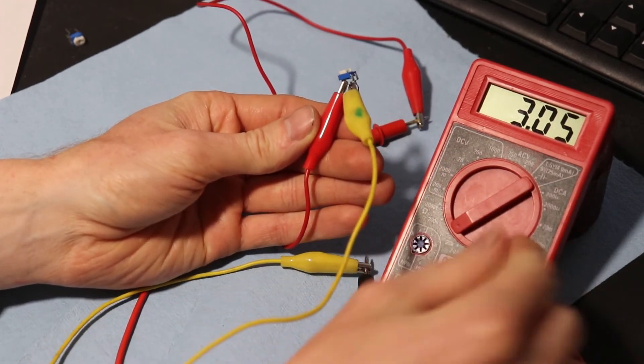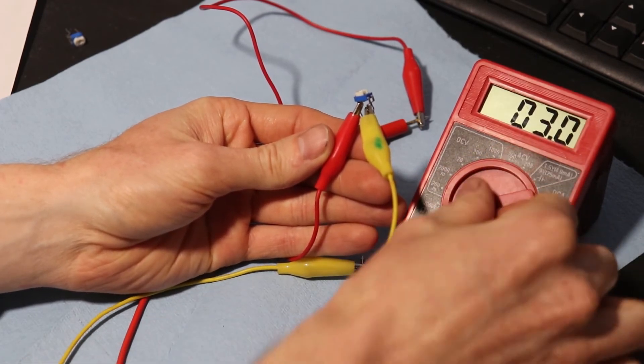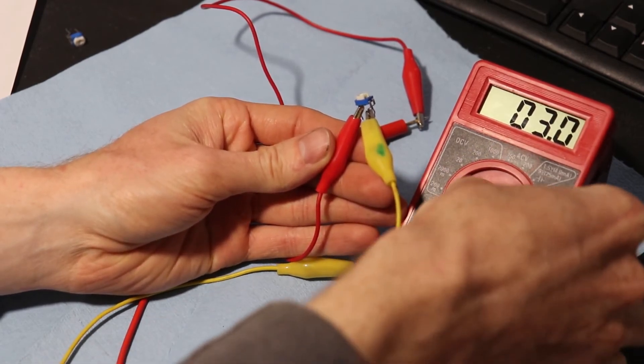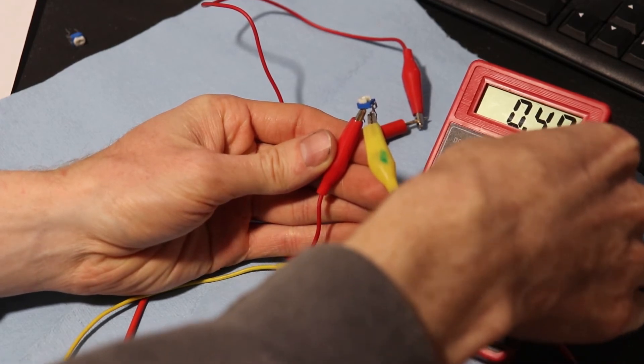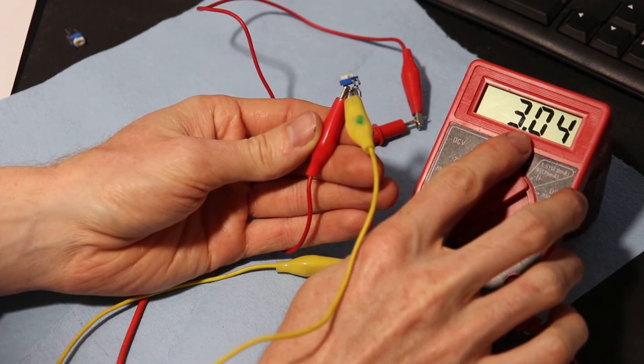And I can see what it would read at the 200k. And again I lose one decimal. You can see if you multiply this out, if you go back to the 20k setting, you get 3,040.